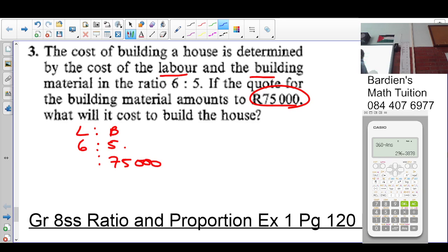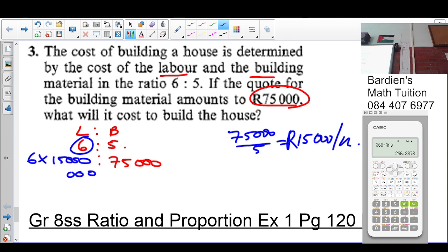What do I do here? 75,000 divided by 5. What is 75,000 divided by 5? 15,000. 15,000 rand per unit, not so. How many units are here? Six. So 6 times 15,000, which is going to give us 90,000. Isn't that 90,000? I am getting 90,000.